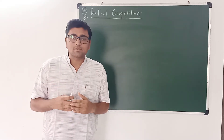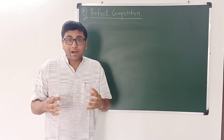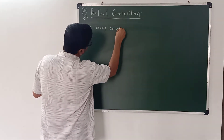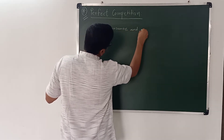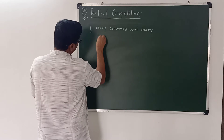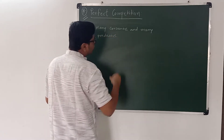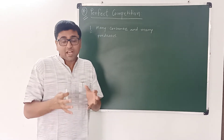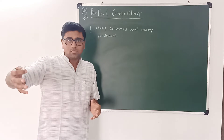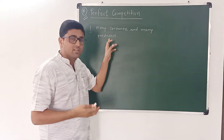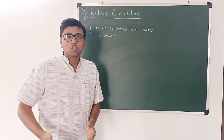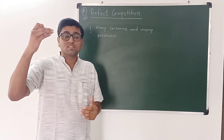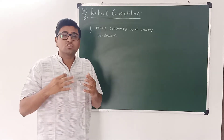There are mainly three characteristics of a perfectly competitive market. First, many buyers, or many consumers, and many producers in the market. This means that the share of an individual consumer in market demand is negligible, and similarly, the share of an individual producer in market supply is also negligible. So neither the individual consumer nor the individual supplier has the power to influence the market price — they cannot change the market price.